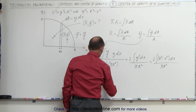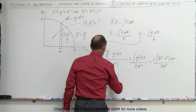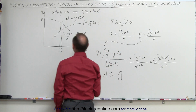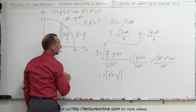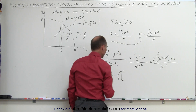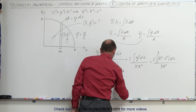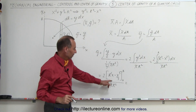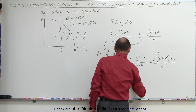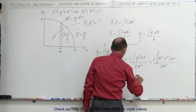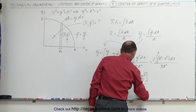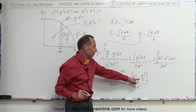Now I can go ahead and integrate the numerator. This would be equal to 2 times, when I integrate this, I get r squared times x minus x cubed over 3, evaluated from 0 to r in the x direction, so my limits will be from 0 to r. Then I divide that by pi r squared. When I plug in the lower limit, I have 0 minus 0, which gives me 0, so I don't have to worry about the lower limit. When I plug in the upper limit, I get 2 times r squared times r, which is r cubed, minus r cubed divided by 3, all divided by pi r squared.